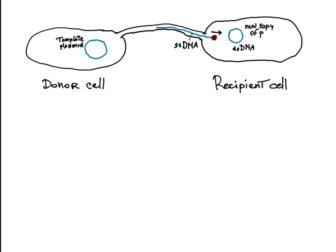The pilus fuses with another cell allowing transfer of the single-stranded DNA from the donor into the recipient. The single-stranded DNA is then replicated to form a double-stranded DNA which circularizes and establishes a copy of the plasmid in the recipient cell.